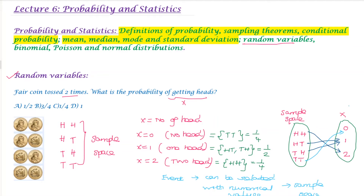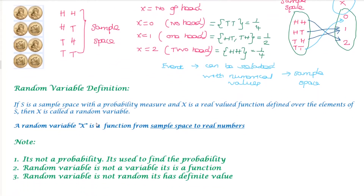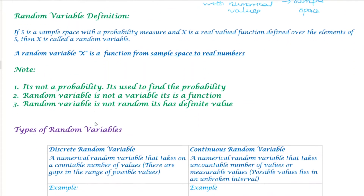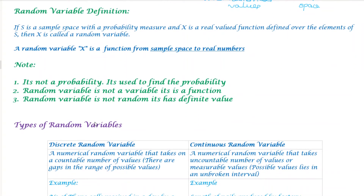This is the random variable definition: a random variable is a mathematical function used to connect the sample space with a numerical value. If we have an event, we can connect the numerical value to the sample space. That mathematical function is a random variable.